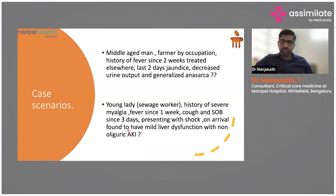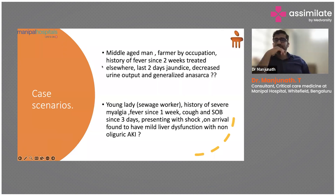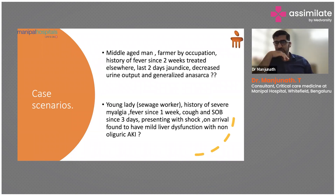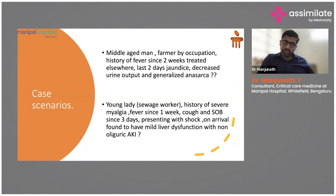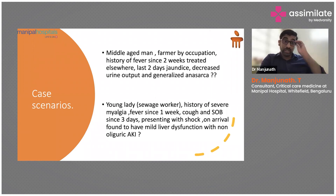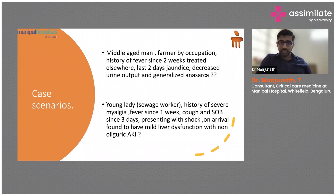The most common scenarios we come across: a middle-aged man, a farmer by occupation, with history of fever for two weeks, treated elsewhere. In the last two days, jaundice and worsening, decreased urine output, and generalized anasarca. This tells us the liver is going into impending failure, and acute kidney injury has already set in. We often fail to take a proper occupational history from the patient or family — 'farmer by occupation' is most important.